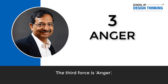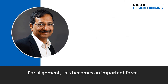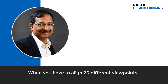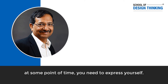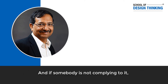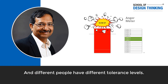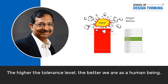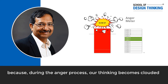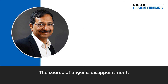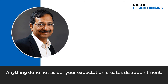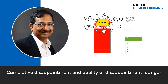The third frictional force is anger. In what situation is anger good? For alignment, it becomes an important force — when you need to align 20 different viewpoints, at some point you need to express yourself. Anger is a built-in part of our thinking process, and different people have different tolerance levels. The higher the tolerance level, the better we are as thinkers, because during anger our thinking process becomes totally clouded and we end up taking foolish decisions. The source of anger is disappointment — anything not done as per your expectation creates disappointment, and cumulative disappointment becomes anger.